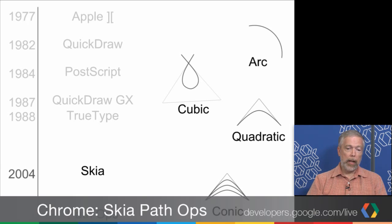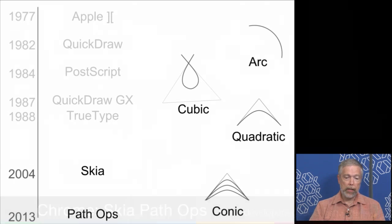Skia has all of these types. It has arcs, it has cubics, quadratics, and now it has conics, which are sections of a cone, which include quadratics. And a PathOp is a way to take all of these curves and operate on them with set operations.